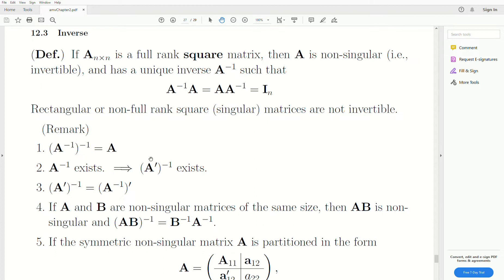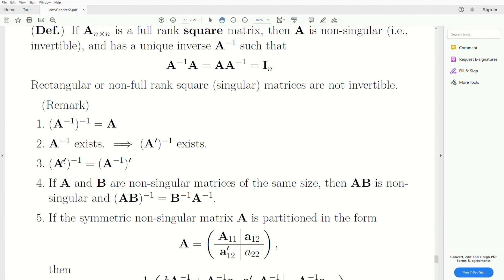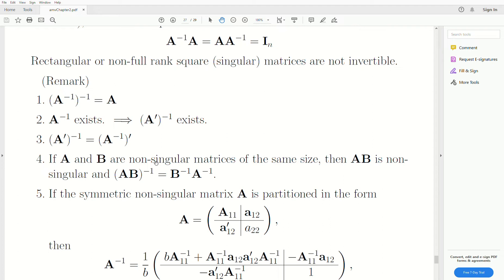Now some properties that we'll have is the inverse of the inverse is the original matrix back. If the inverse of a matrix exists, then the transpose, the inverse of the transpose exists. That's a nice property. And here the transpose and inverses can be switched and we get the same matrix.